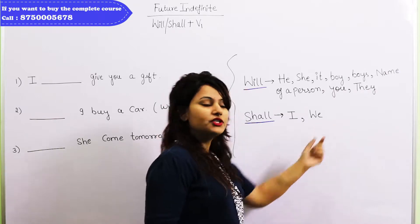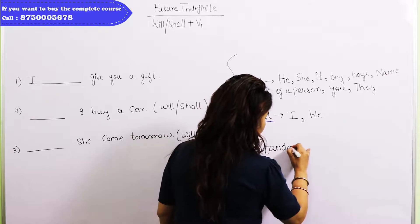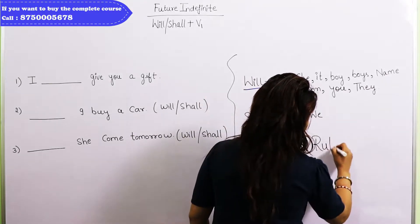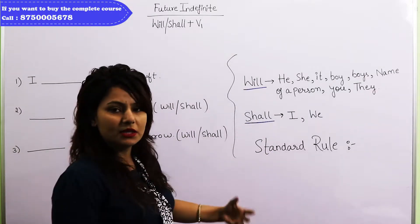I shall, we shall. This, which I have written here, this is our standard rule. This is absolutely right. But in modern English, we also use will.